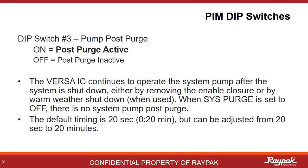Dip switch number three controls the post purge option. Post purge allows the pumps and the cold water protection systems to run for a bit after the burner shuts off. This extra 20 seconds of pump run time gets the residual heat out of the combustion area so you do not trip on a high limit accidentally. The default time is just 20 seconds, but it can be adjusted from 20 seconds to 20 minutes.